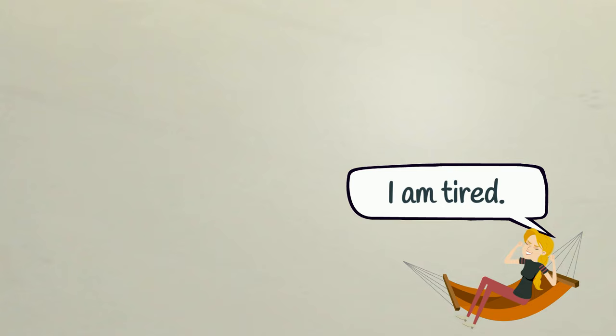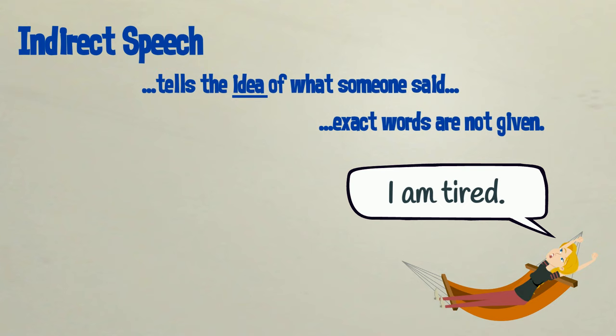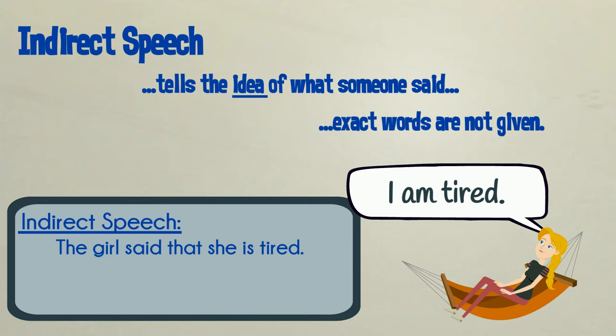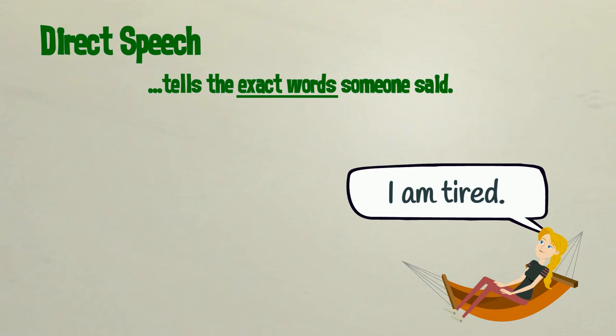Indirect speech tells the idea of what a person said. The exact words are not given. For example, the girl said that she is tired. Direct speech tells the exact words that were said. For example, 'I am tired,' said the girl.